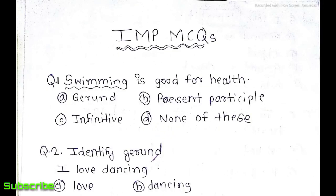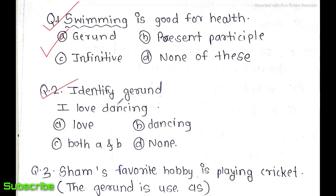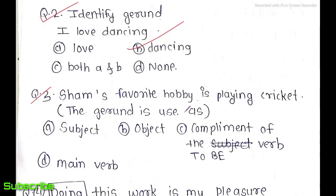Now let's solve MCQs. Question 1: 'Swimming is good for health' — underline the word. Swimming ends in -ing and works as a noun, so this is the gerund. Option A is correct. Question 2: 'I love dancing' — identify the gerund. Dancing ends in -ing, so dancing is the correct option. Question 3: 'Sham's favorite hobby is playing cricket' — the gerund is used as a complement of the sentence because it follows the to-be form 'is.'